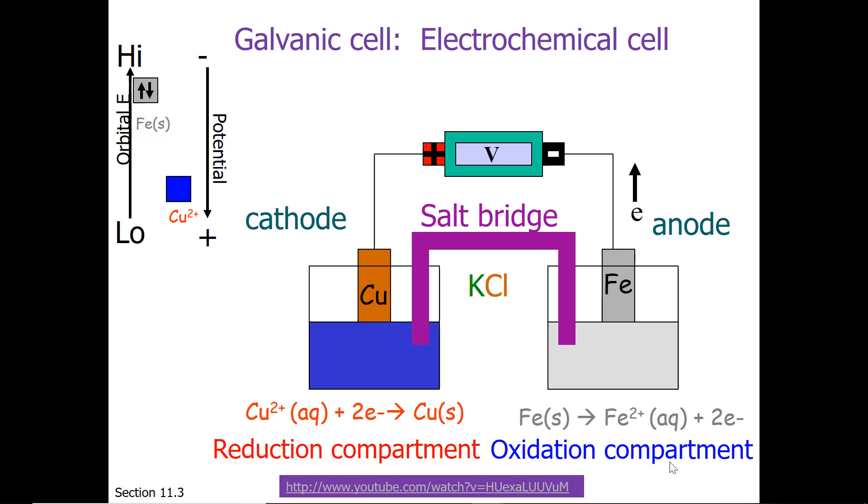The electrons flow along the wire from the anode to the cathode, and hopefully that makes sense because this reaction is generating electrons. This reaction is reacting with and taking away electrons, so we are pushing electrons and pulling electrons.